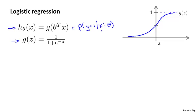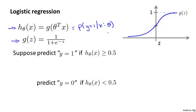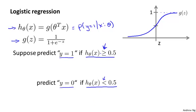If we wanted to predict whether y equals 1 or y equals 0, here's what we might do. Whenever the hypothesis outputs that the probability of y being 1 is greater than or equal to 0.5 — meaning it's more likely to be y equals 1 than y equals 0 — then let's predict y equals 1. Otherwise, if the estimated probability of y being 1 is less than 0.5, then let's predict y equals 0. If h of x equals 0.5 exactly, we default to predicting positive, but that detail doesn't matter much.